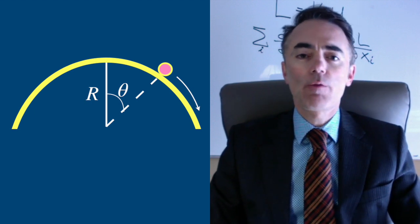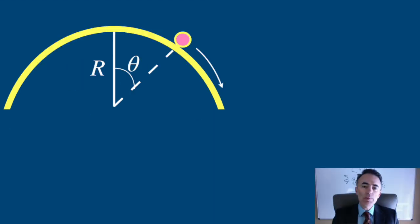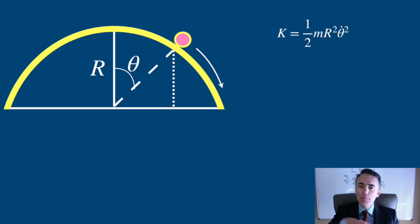Let me write the Lagrangian. Because of the symmetry of the system, I will use polar coordinates. So for the kinetic energy of the object, I have one half of m r squared theta dot squared. For the potential energy, I will consider zero at the bottom of the hemisphere. So it will be m g r cosine of theta. So the Lagrangian writes as...